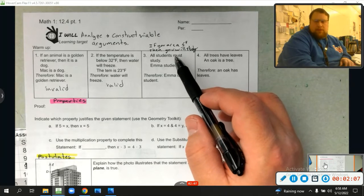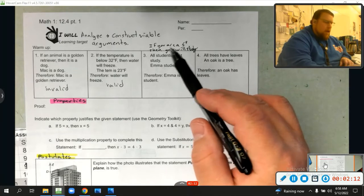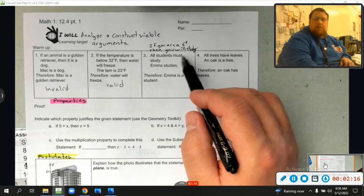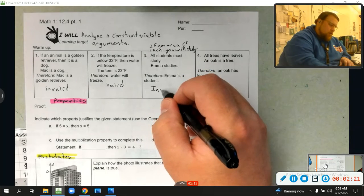Well, maybe she's a student. Maybe she just studies for fun. I don't know. Maybe she's studying for work. We don't know, but that doesn't mean she's a student. If she's a student, she must study, but her studying doesn't make her a student, which is what it says here. So that is an invalid argument. It doesn't work backwards.